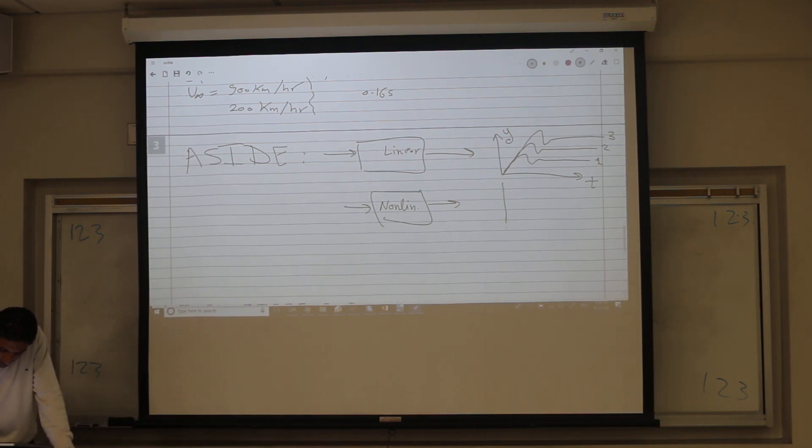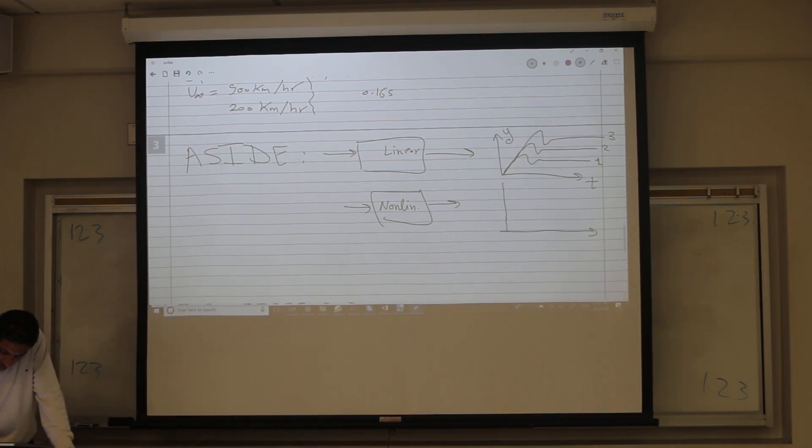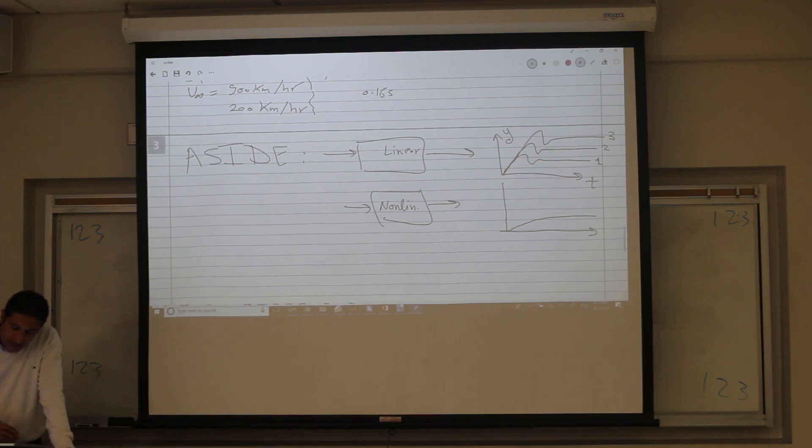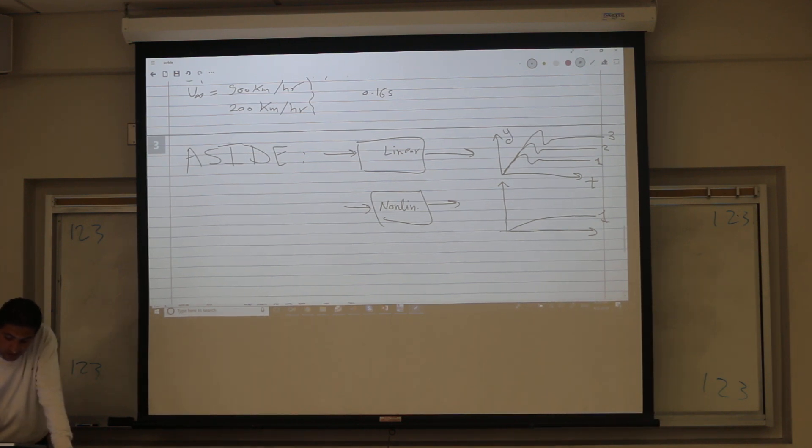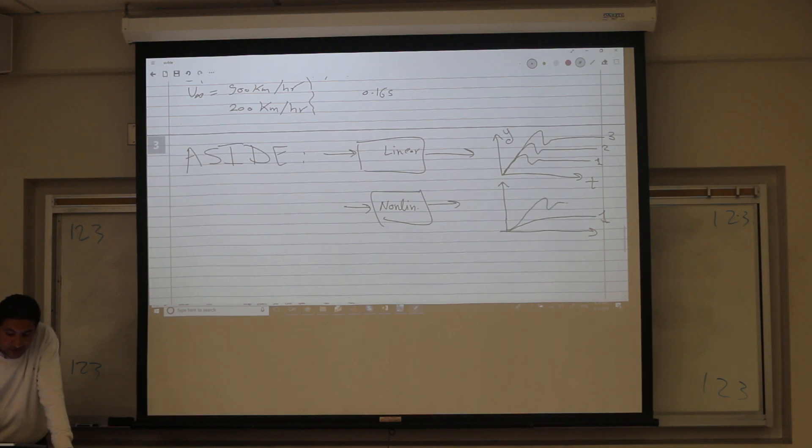In this case, this may be the steady state response due to a unit step, first order system. If you increase your input to two, you may get totally different response, became second order system. And if you increase your input, you may get even an unstable system, unstable response.